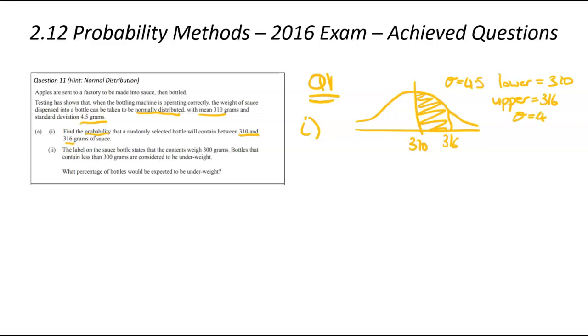What's the standard deviation? That's easy, 4.5. And the mean, also easy, 310. When you plug that into your calculator, you're going to get a probability of 0.4088. And I rounded that to 4dp, as I always do.